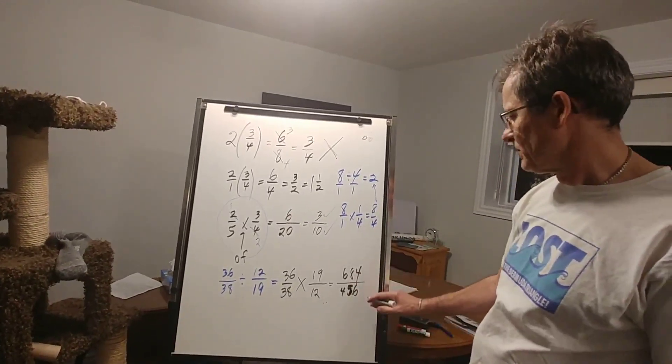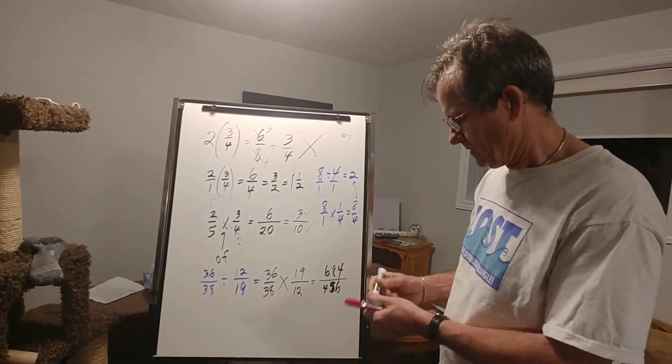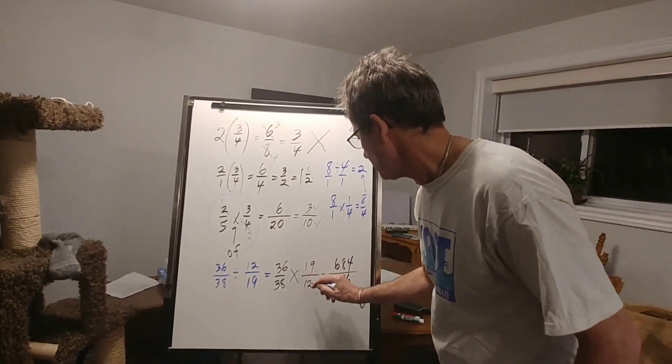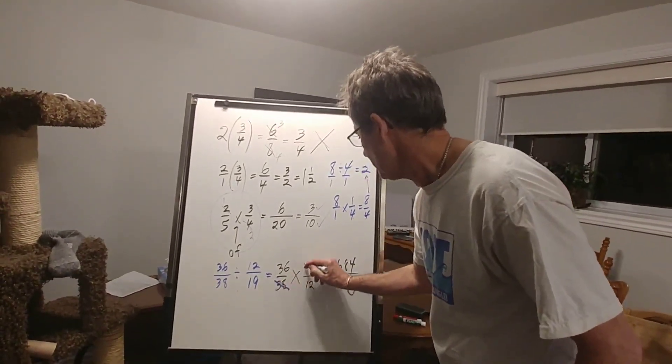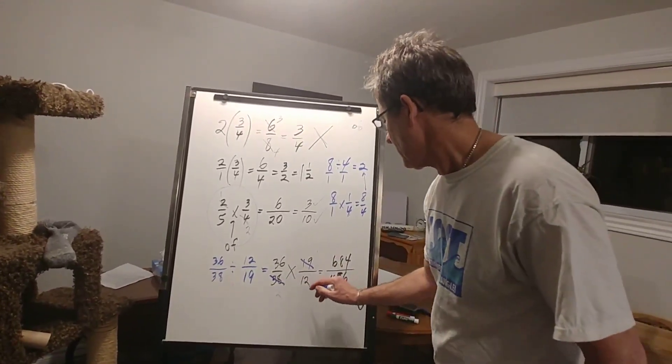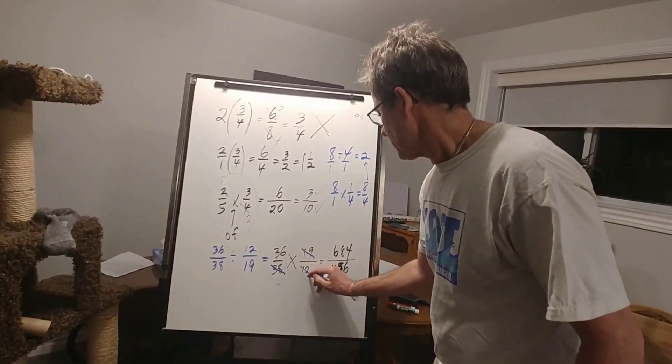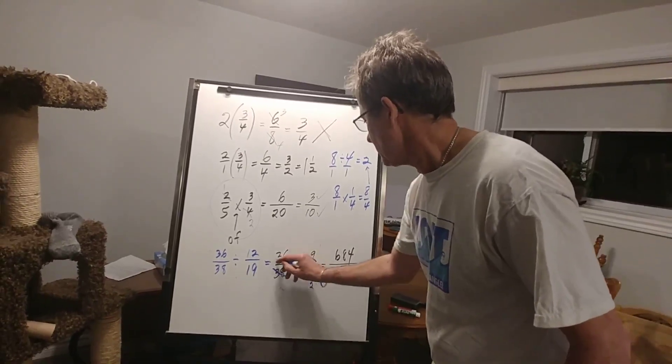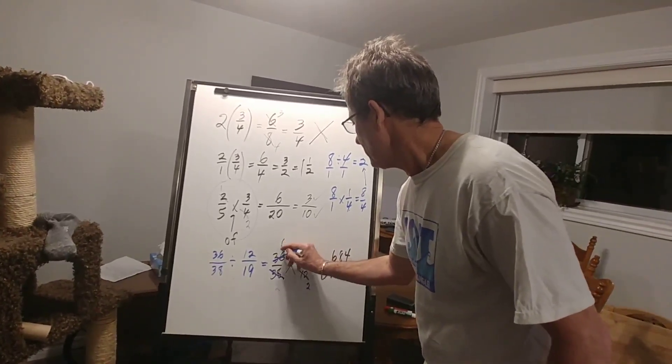Before I reduce that, let's go back and reduce this one. Because for one thing, 19 goes into 38 twice. 6 goes into 12 twice, and it goes into 36 six times.